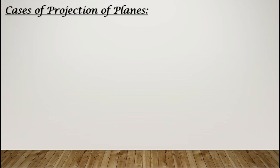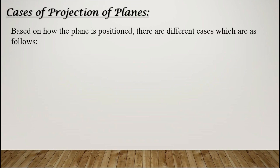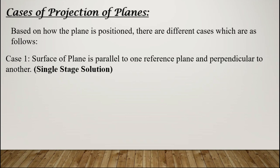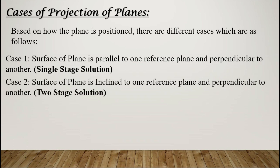Moving forward — cases of projection of planes. Based on how the plane is positioned, there are different cases. Case one: the surface of the plane is parallel to one reference plane and perpendicular to another. The solution will consist of a single stage. Case two: the surface of the plane is inclined to one reference plane and perpendicular to another. The solution for this case will have two stages.